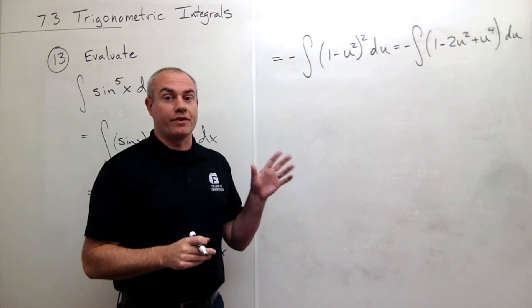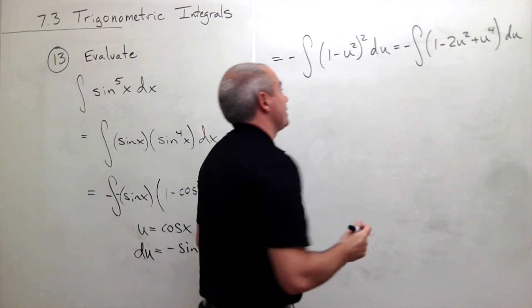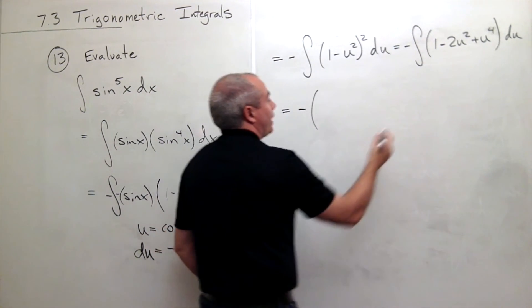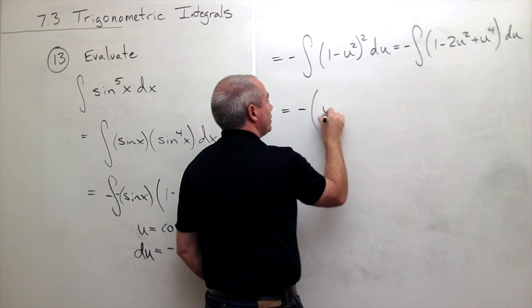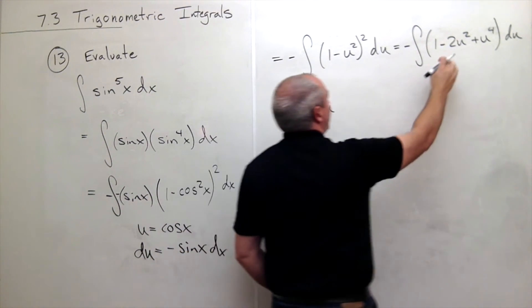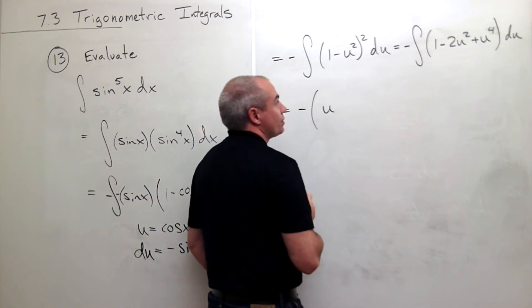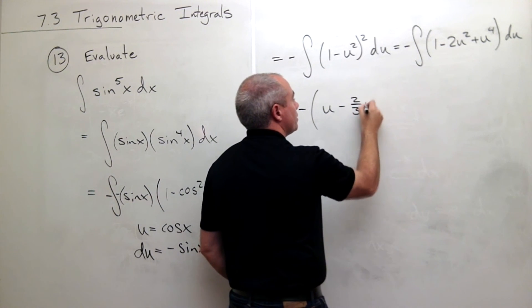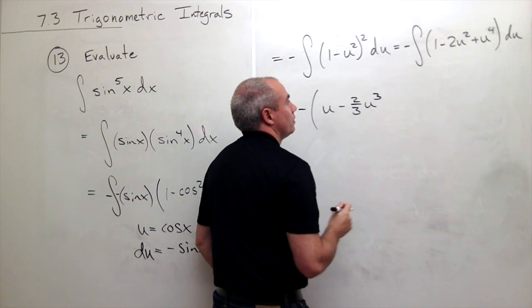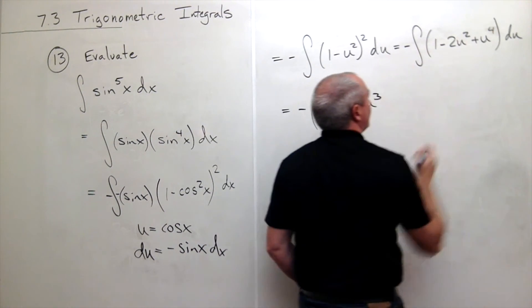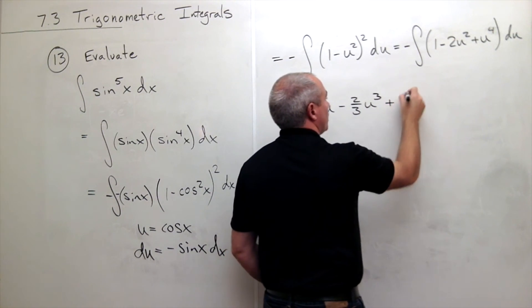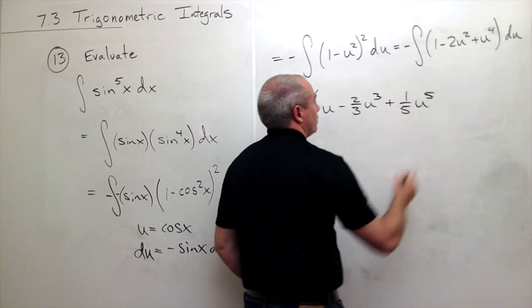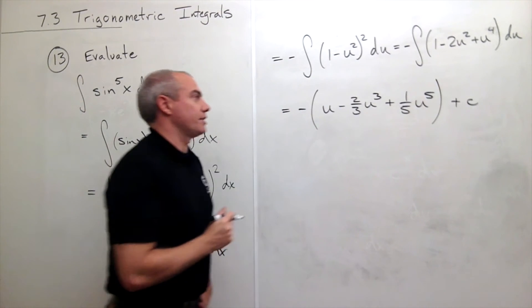All right, everything's good. Now I'm ready to take an antiderivative. I still have my negative. Antiderivative of one is u. Antiderivative of negative two u squared is negative two thirds u cubed. Antiderivative of u to the fourth would be plus one fifth u to the fifth. And then I have a constant.